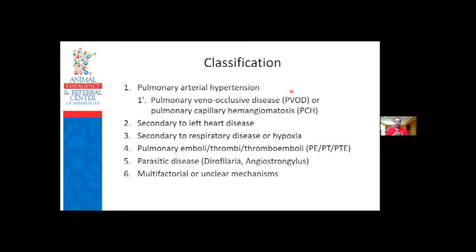The consensus statement redefined the classifications slightly. CVT has five classifications, but the consensus statement came up with six. It loosely follows the human classification of pulmonary hypertension with some modifications, specifically for heartworm disease, since heartworm disease really doesn't happen in people.